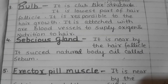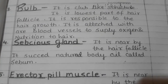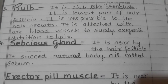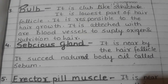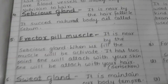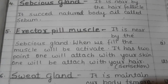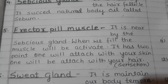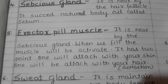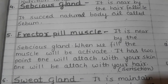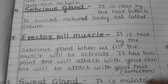The fourth component is the sebaceous gland, which is located nearby the hair follicle. It secretes natural body oil called sebum. The fifth component is the erector pili muscle, which is located nearby the sebaceous gland. When we feel cold or frightened, the muscle becomes activated.